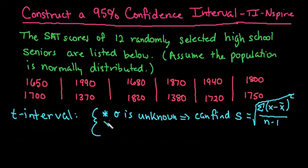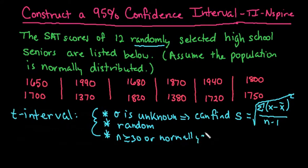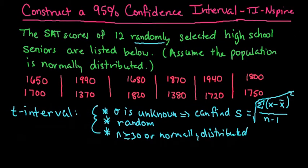The other things that have to be known: we have to have a random sample, which it says explicitly - randomly selected. And either we have to have n greater than or equal to 30 or normally distributed. Since it says to assume normal distribution, we can go ahead and continue. Check your text to see exactly what they're looking for.